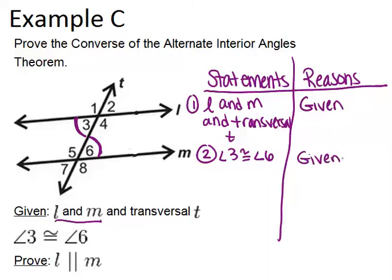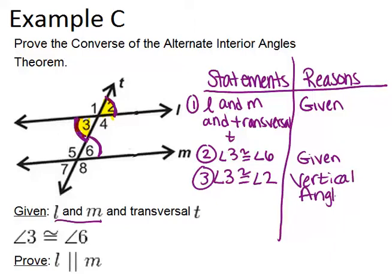Now, because angle 3 and angle 2 are vertical angles, these two angles have to be congruent. So that's the next thing I'm going to say. Angle 3 is congruent to angle 2 because of the vertical angles theorem. Vertical angles are always congruent.